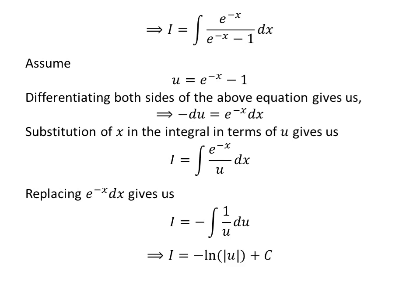We know the integral of 1 upon u is the natural log of the absolute value of u. So i is equal to minus natural log of absolute value of u plus capital C. Capital C is the arbitrary constant of the indefinite integral — never forget to add this constant.